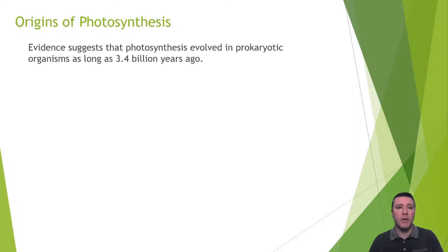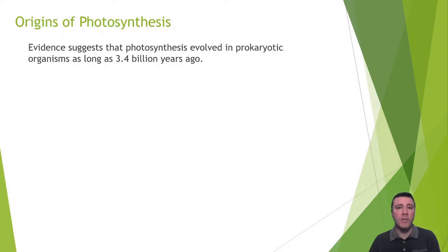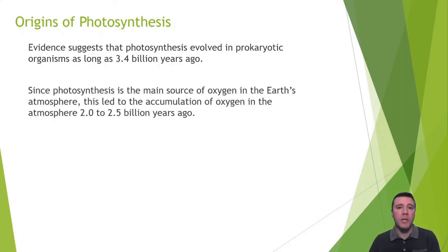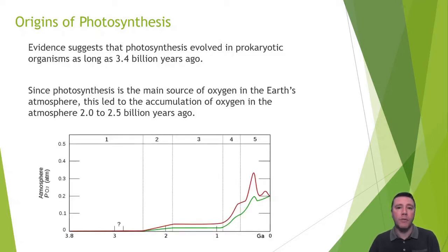Our current understanding of the origins of photosynthesis, based on evidence that's been collected, is that photosynthesis originated as early as 3.4 billion years ago. Before the evolution of photosynthesis, virtually no gaseous oxygen existed in the Earth's atmosphere. Therefore, since oxygenic photosynthesis is the primary source of atmospheric oxygen, the so-called great oxygenation event, which resulted in the first accumulation of oxygen gas in the atmosphere, didn't begin until 2.4 to 2.5 billion years ago.